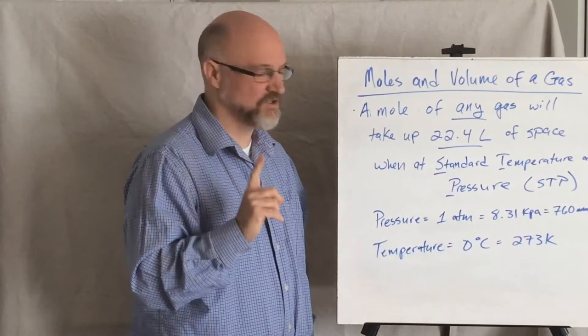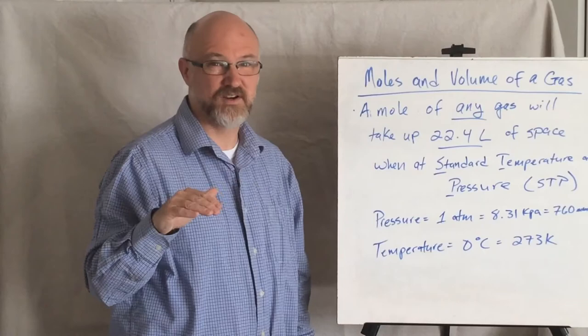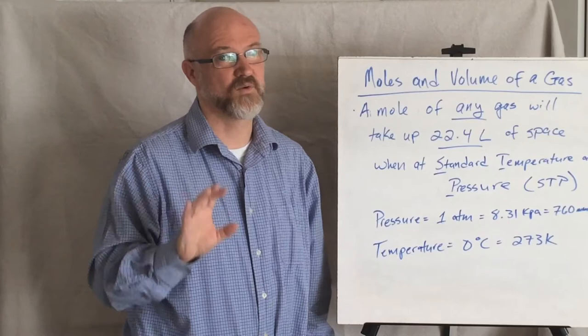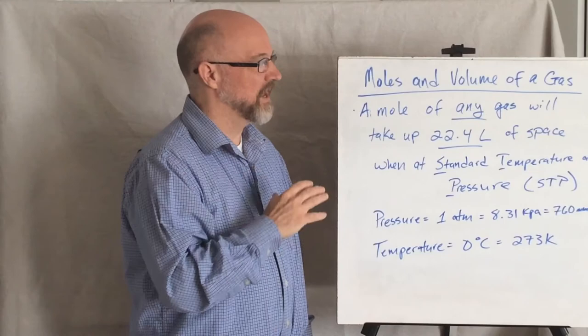And those certain conditions are what we call standard temperature and pressure, otherwise known as STP. So STP is pressure of one atmosphere, that's sea level atmosphere, 14 pounds per square inch, 8.31 kilopascals, 760 millimeters of mercury. It's all the same amount of pressure, just different rulers, different ways to measure it. And a temperature of zero degrees Celsius, which of course we can also talk about in terms of Kelvin, that's 273 Kelvin.